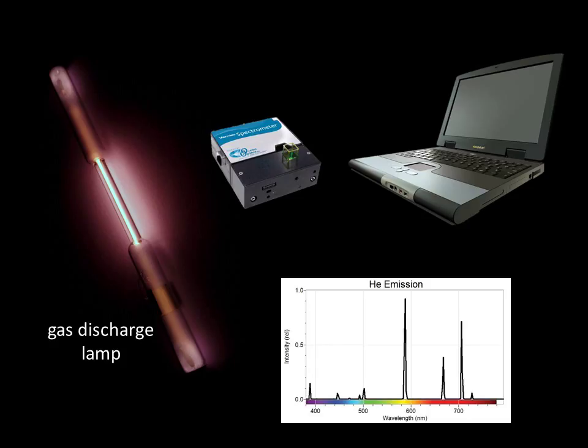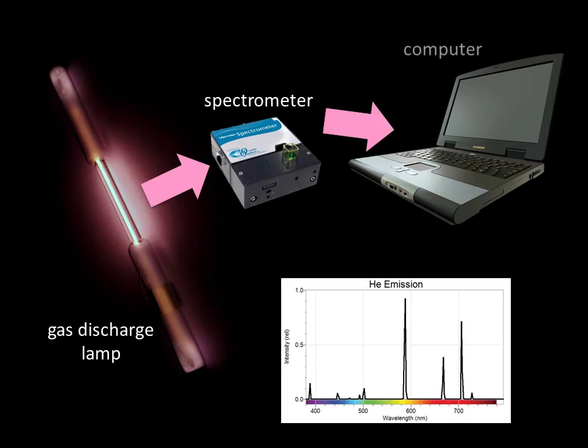The atoms jostle around and the electrons jump up, jump down, and then emit their photons. We pass the light through a spectrometer, and then we can obtain a spectrum for each element.